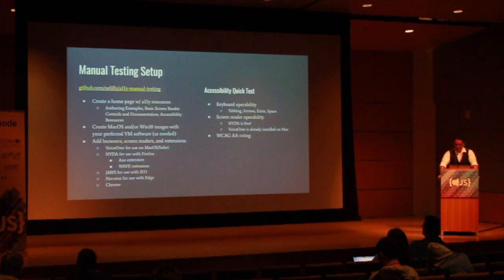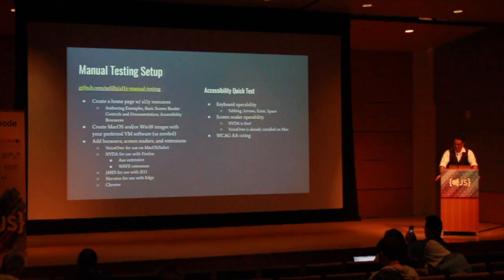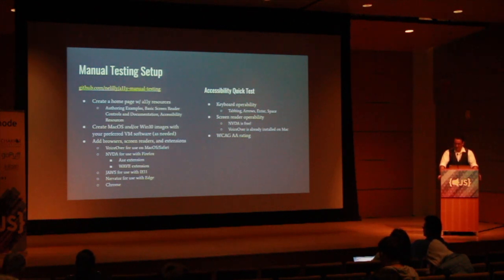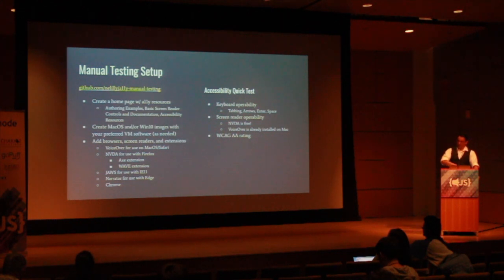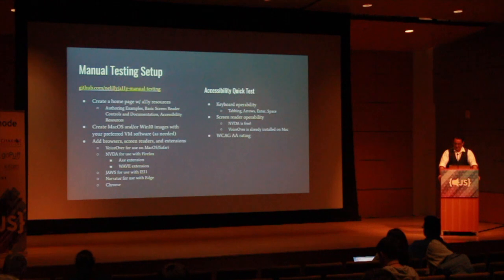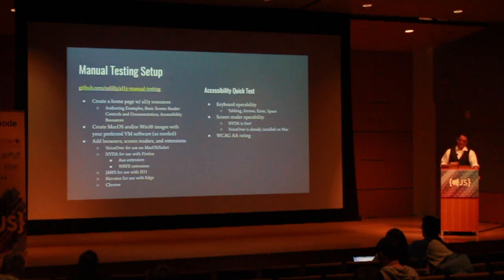If you don't know what's needed in a basic manual testing setup, I have a repo that presents an overview. You want to create a homepage with accessibility resources that includes examples, basic screen reader controls, documentation, and accessibility resources — great for when you're in the middle of testing and want resources close at hand. Create a Mac OS or Windows 10 machine image with your preferred virtual machine for whatever platform you're not working on. Add browsers, screen readers, and testing extensions to that virtual machine and to your work computer. It's great to have the homepage set for all the browsers in your virtual machine so that as you fire up your accessibility testing VM, it has all your resources right there.